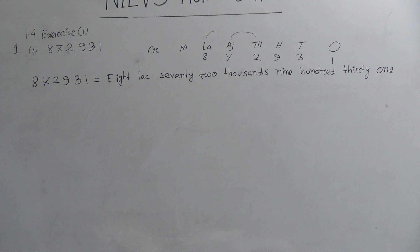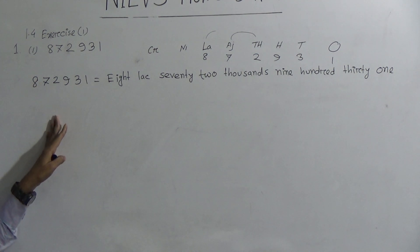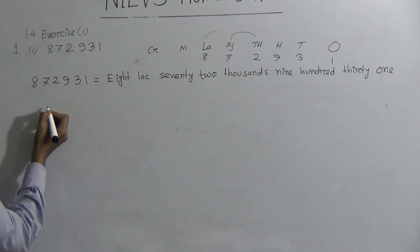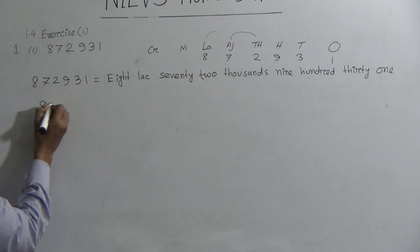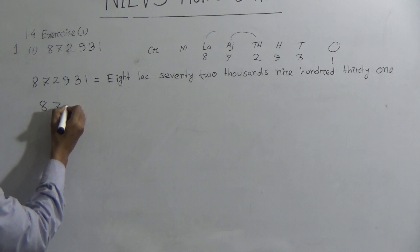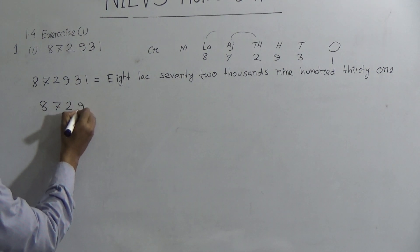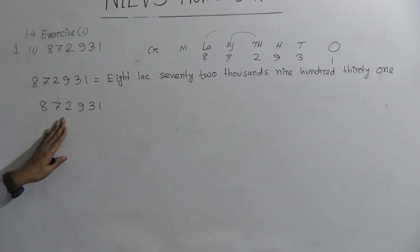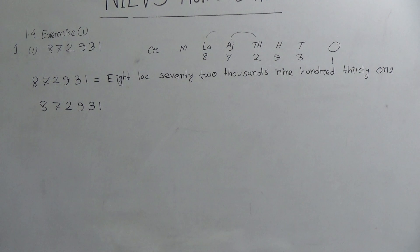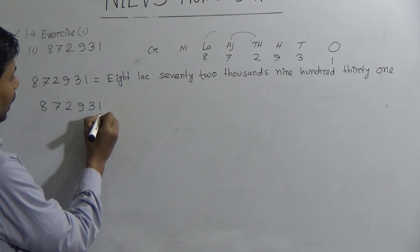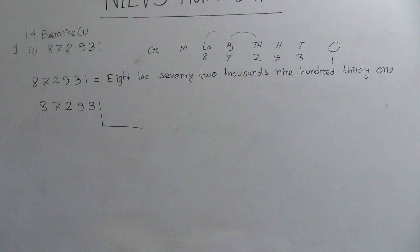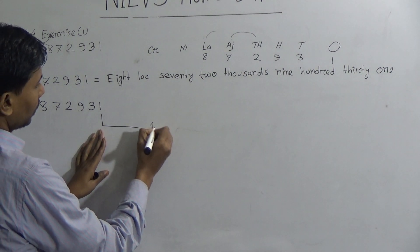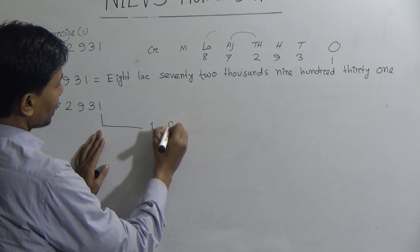Now we have to determine the place value of this number. You have to write it like this: 8, 7, 2, 9, 3, 1. So 1 is in the ones place.